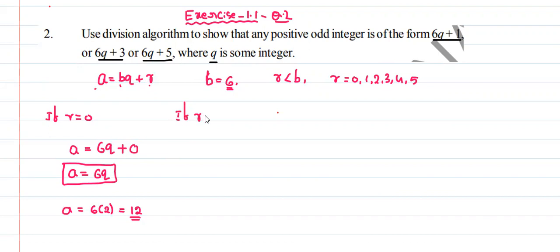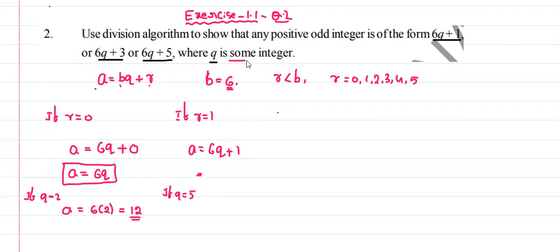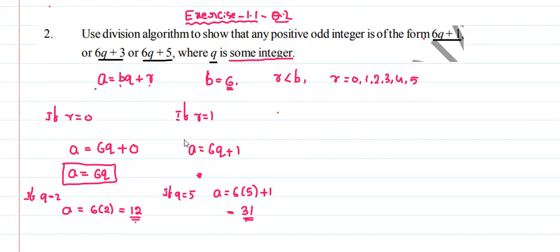If r is equal to 1, then a is equal to 6q plus 1. Taking q equals 5 as some integer, a equals 6 into 5 plus 1, which is 30 plus 1 equals 31. This is an odd number, so 31 is a positive odd integer of the form 6q plus 1.